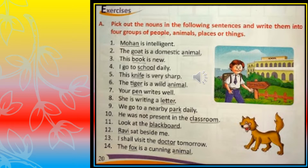Your pen writes well — pen is a naming word. She is writing a letter — letter is a naming word. We go to a nearby park daily — park is a naming word. He was not present in the classroom — classroom is the naming word. Look at the blackboard — blackboard is the naming word. Ravi sat beside me — Ravi is the naming word. I shall visit the doctor tomorrow — doctor is the naming word. The fox is a cunning animal — fox and animal are both naming words.